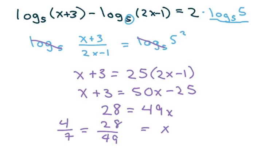And if you plug 4/7 in each of these pieces, it doesn't violate the fact that our quantity here, if this quantity is called x, this quantity has to be greater than 0. So that's our answer, x = 4/7.